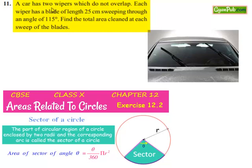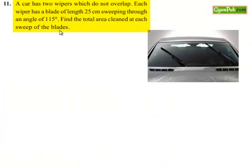Moving on to 11th question. A car has two wipers which do not overlap. Each wiper has a blade of length 25 cm sweeping through an angle of 115 degrees. Find the total area cleaned at each sweep of the blades.